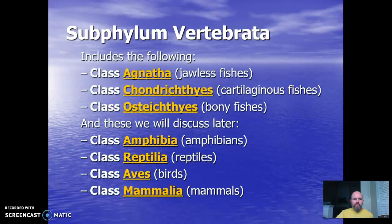The classes of vertebrates include Agnatha — the jawless fishes; Chondrichthyes — cartilaginous fishes; Osteichthyes — the bony fishes; and then later we'll cover Amphibia, Reptilia, Aves, and Mammalia.